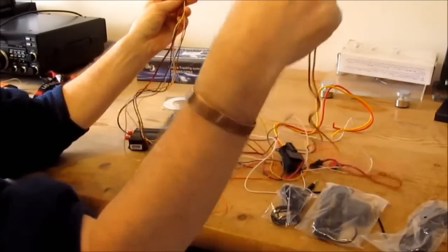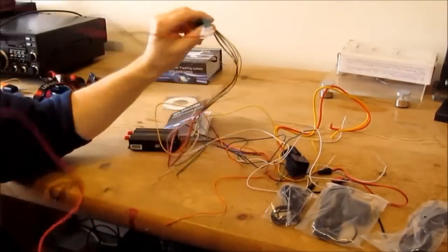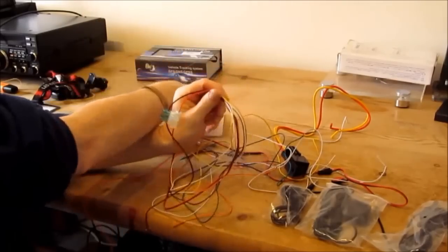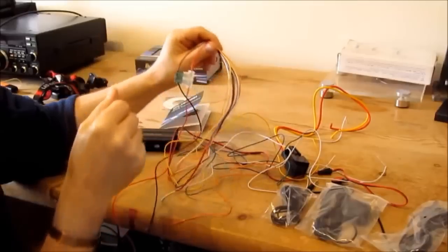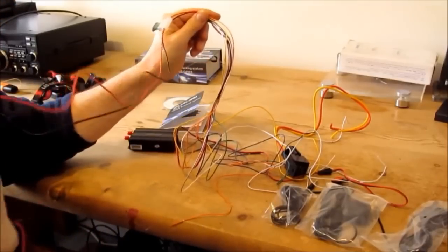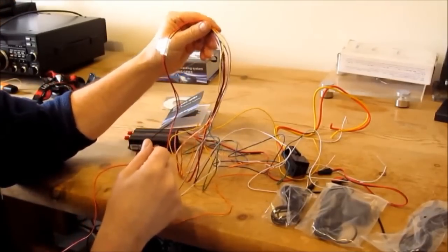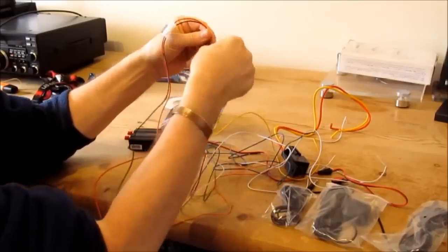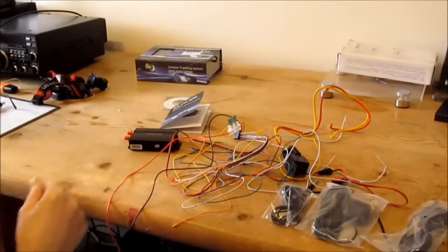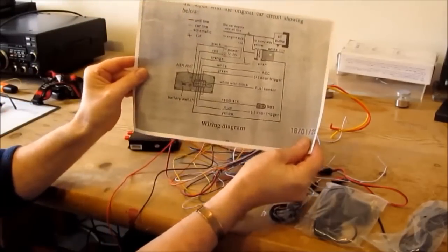Black and red are for power. And having looked at the book, this is the little book that comes with it, which is written in Chinglish, but having looked at the book, that's pretty much all you need to connect to be able to get the thing to work initially. The rest of the wires, now there is a wiring diagram, very small. I've printed it out and blown it up, is here.